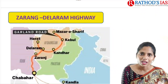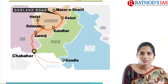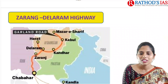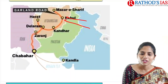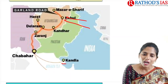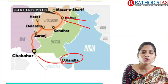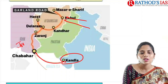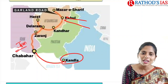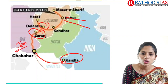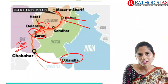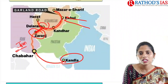Next is the Zaranj-Delaram Highway. This is important for India because to reach Afghanistan we cannot use Pakistan's airspace. So we go through the sea route — from Kandla Port in Gujarat to Chabahar Port in Iran, and from Iran we reach Afghanistan. To reach Kabul, we use the Zaranj-Delaram Highway, which is connected to the Ring Road of Afghanistan.